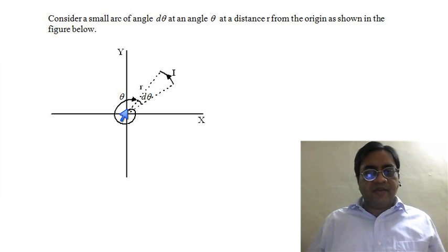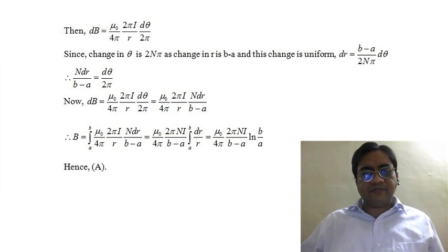Strictly speaking this type of arc is not going to be circular but since this is a small angle, we can treat this to be circular. And that would allow us to use the formula for magnetic field at the center of a circular arc which is magnetic field equal to μ₀ by 4π times 2πI upon radius multiplied by angle of the arc divided by 2π.